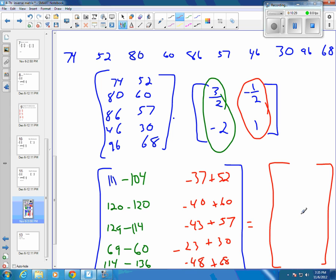And so whenever I add all those numbers together, 111 minus 104 gives me back my 7. Negative 37 plus 52 is going to be 15. 120 minus 120 is 0. Negative 40 plus 60 is 20. 128 minus 114 is a 15. And negative 43 plus 57 is 14. 69 minus 60 is 9. Negative 23 plus 30 is 7. 114 minus 136 is 8. And negative 48 plus 68 is 20.